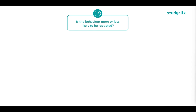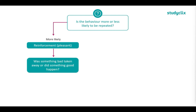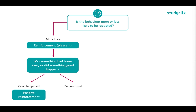In terms of consequences, you can have reinforcement as well as punishment. This flowchart helps you identify them. The first question is: is the behavior more or less likely to be repeated due to the consequence? If it is more likely, it is reinforcement — something pleasant that makes the behavior want to be repeated. Next, we ask: was something bad taken away, or did something good happen? If something good happened, we call this positive reinforcement; if something bad was removed, we call this negative reinforcement.